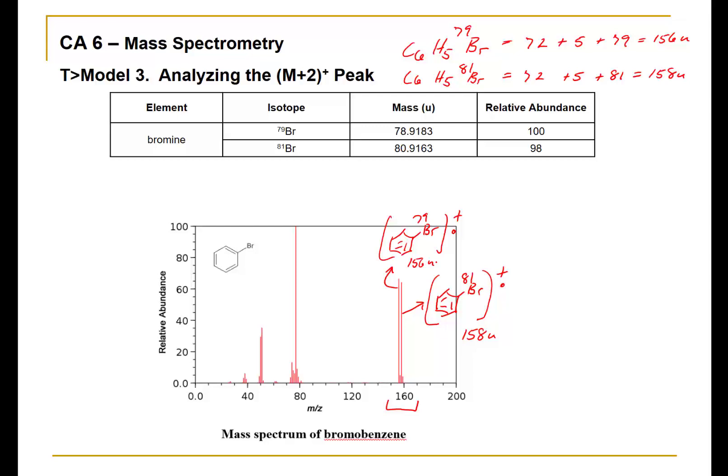Consider how this fragment was generated, which is our base peak at 77 atomic mass units. It corresponds to this carbocation starting from the molecular ion, the lower mass peak. What was lost is bromo-79 as a radical. That's not directly detected, but we know it happened because 77 mass unit was detected. Similarly, from the M plus 2 peak, what was lost is bromo-81 radical.